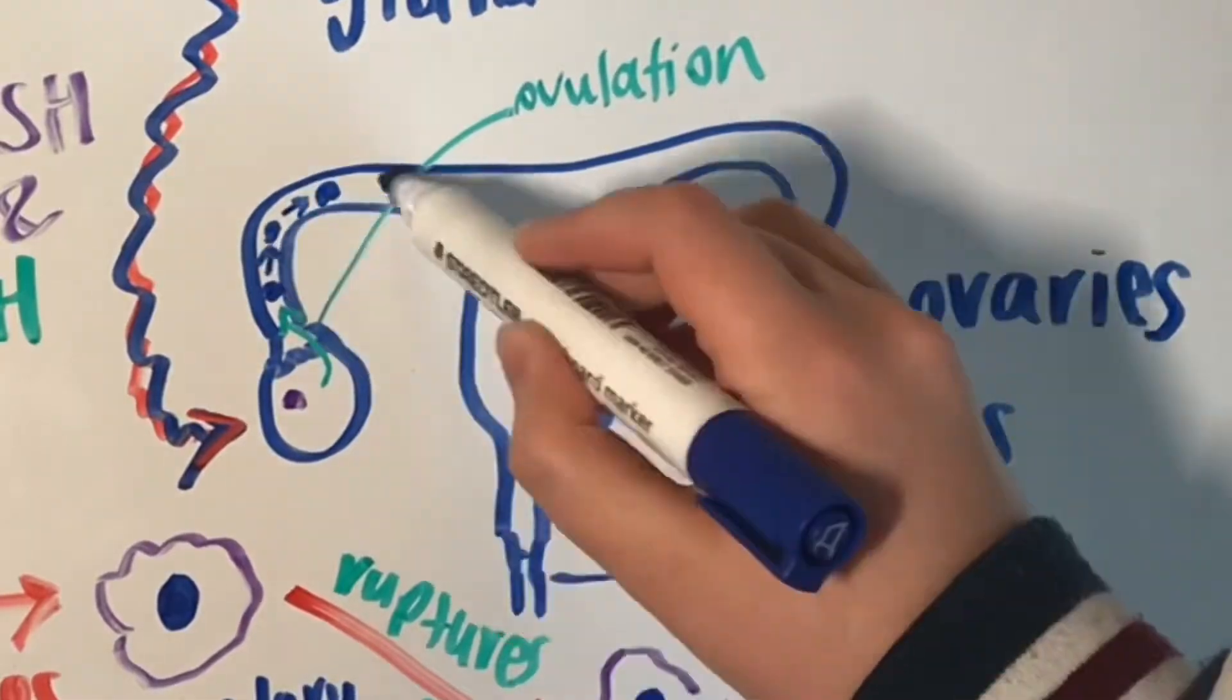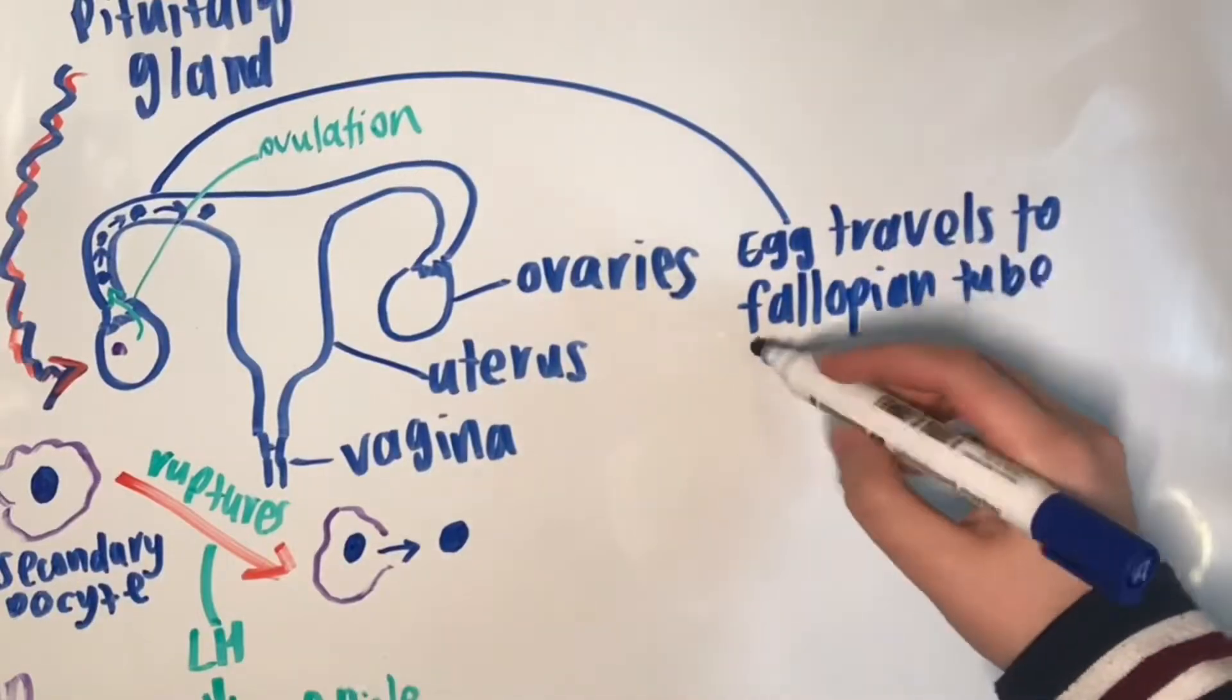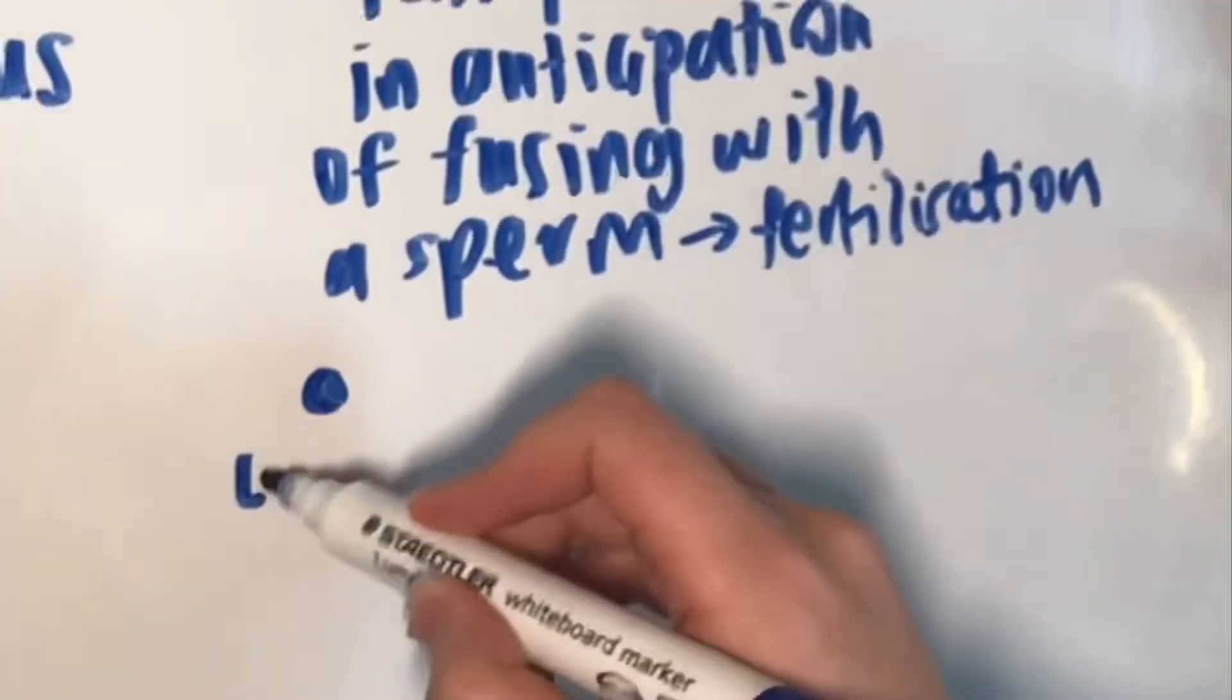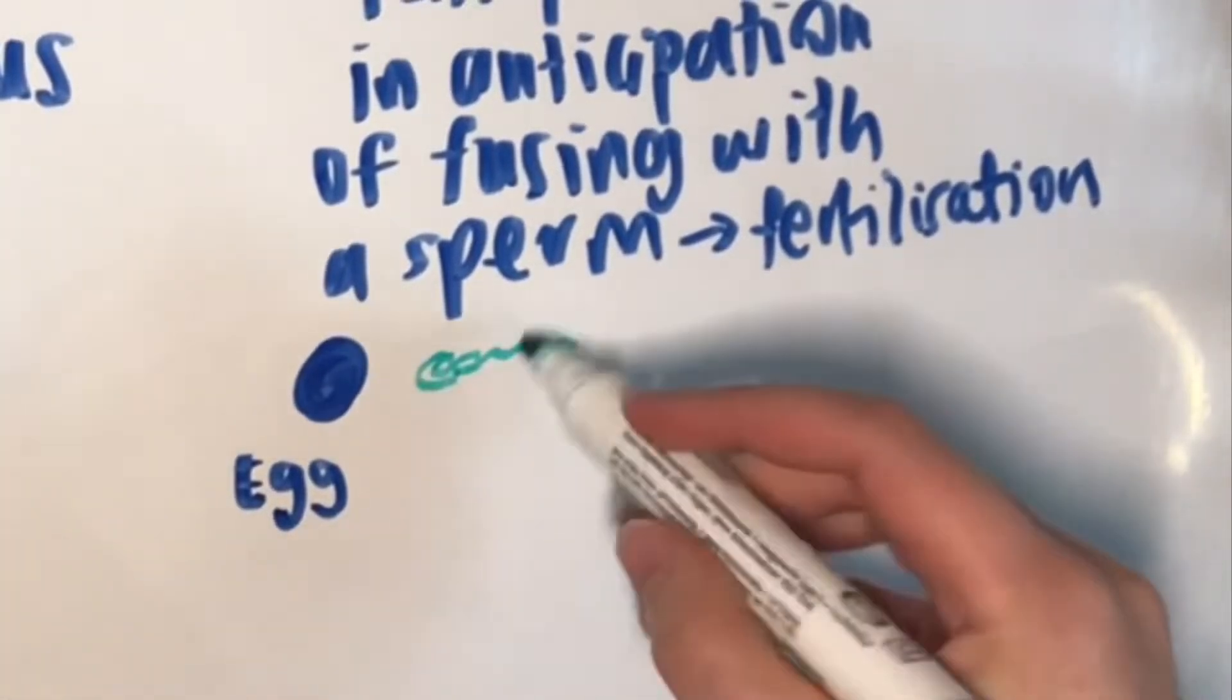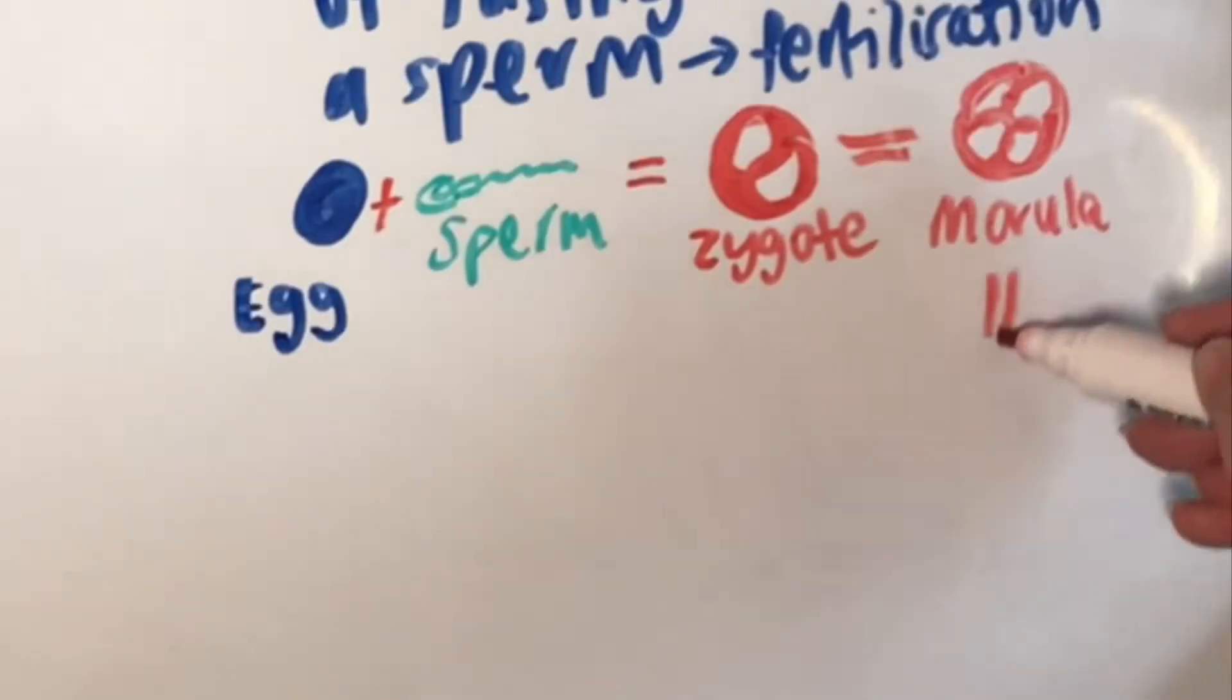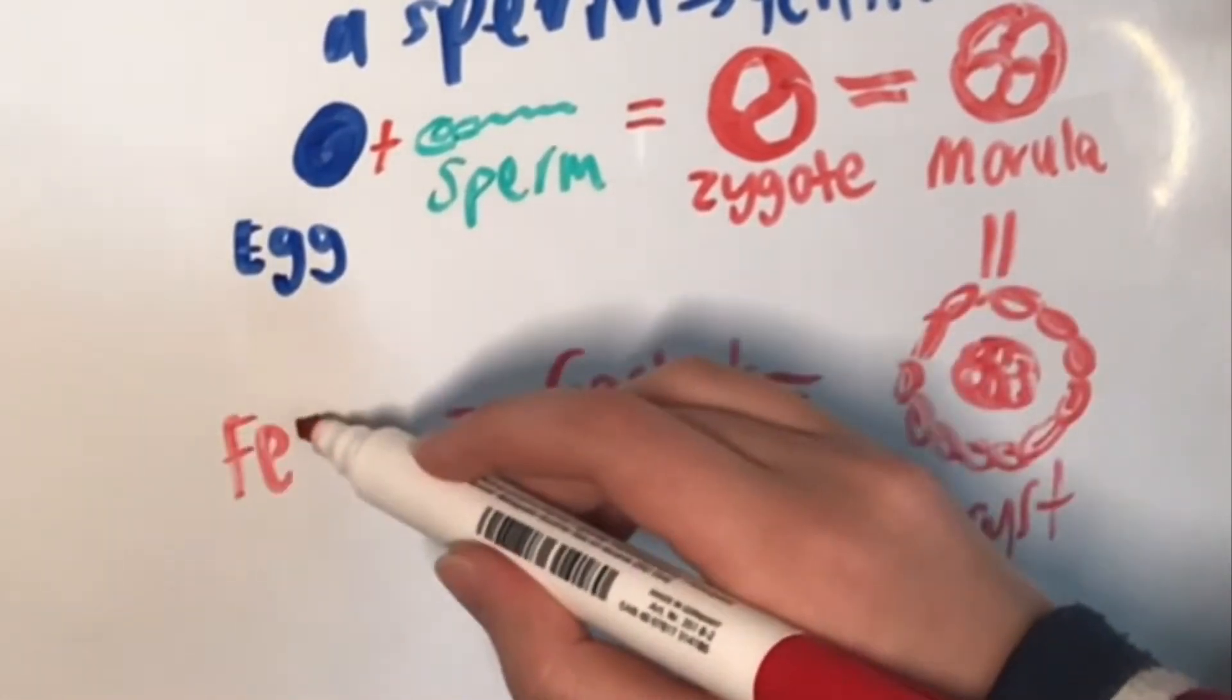Meanwhile, the egg will travel to the fallopian tube in anticipation of fusing with a sperm through the process of fertilization. If fertilization does occur after ovulation, then the zygote will divide through mitotic division and become a morula, blastocyst, gastrula, embryo, and then a fetus.